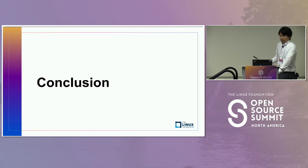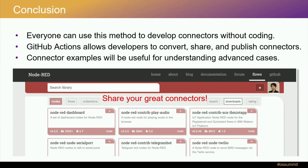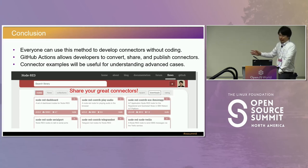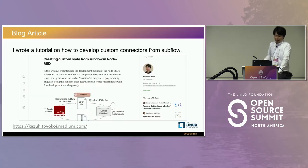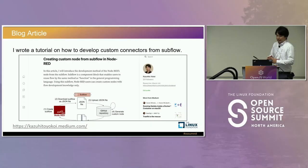Let me proceed to the conclusion. Everyone can use this method to develop custom connectors without coding. GitHub Actions allows developers to convert, share, and publish custom connectors. I hope my connector examples are useful for understanding advanced cases. If you develop a great custom connector, please share it on the flow library. I also wrote a step-by-step tutorial on how to develop custom connectors from subflow — today's session is a summary of that blog content, so please check the website when you try this method.